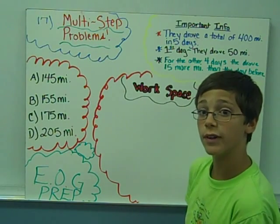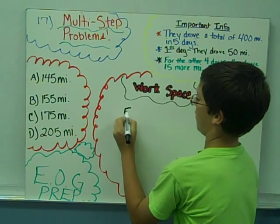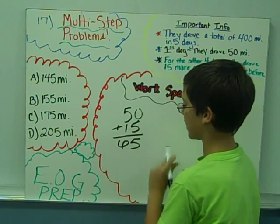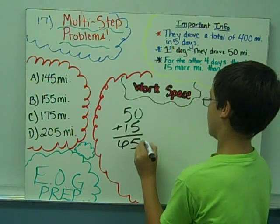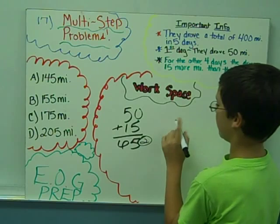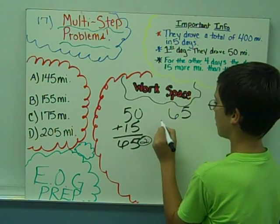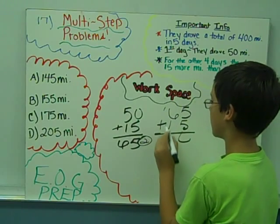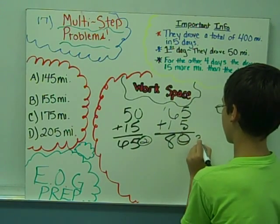So if you do 50 plus 15, you get 65. That's for day two. And if you do 65 plus 15, you'll get 80. That's for day three.